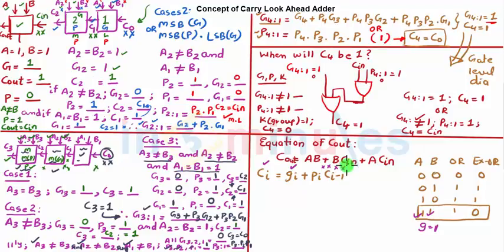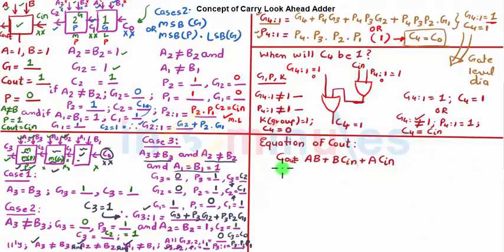Now let's quickly write all the equations here. We know that Ci is equal to Gi plus Pi times Ci minus 1. Let's substitute i equals 1, so C1 is equal to G1 plus P1 times C0. Let's call this equation 1.